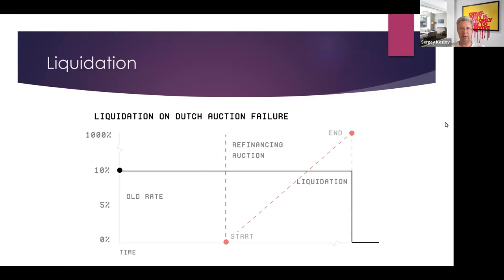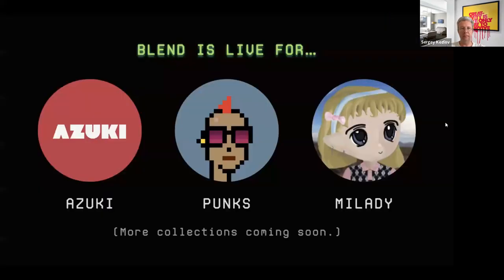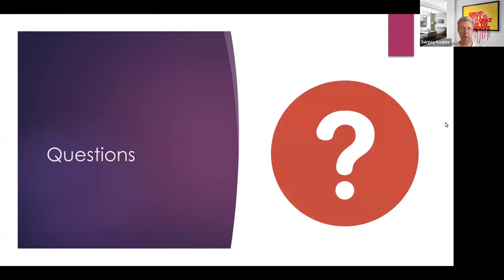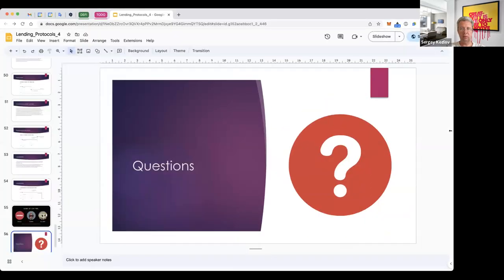So liquidation is: the auction starts at zero, goes to 1,000%, no new lenders appear, and you as the lender liquidate the loan. At launch, Blend was working with three NFT collections: CryptoPunks, Azuki, and Milady — roughly 10,000 NFTs each, about 30,000 NFTs total eligible as collateral.